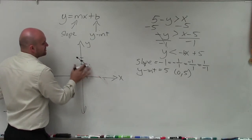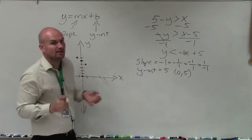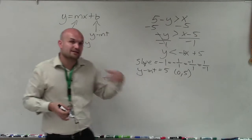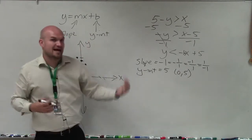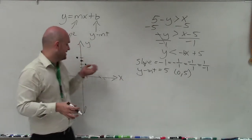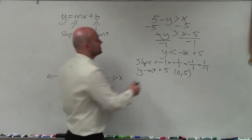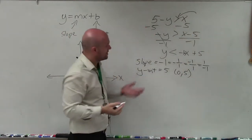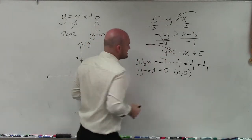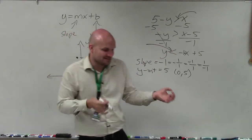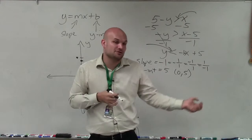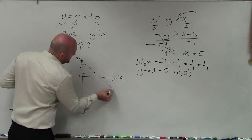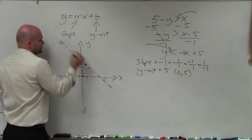Now before you get to graphing it, we want to be able to identify, am I graphing a dashed or a solid line? Is my line going to be a part of the solution or not? If it's dashed, it's not part of the solution. If it's solid, it is part of the solution. So to determine that, we need to look at our inequality symbol. And since that is less than, it doesn't mean it's less than or equal to. If it's less than or greater than, it's going to be dashed. If it's less than or equal to, or greater or equal to, it's going to be solid. So therefore, I'm going to have a nice dashed line.